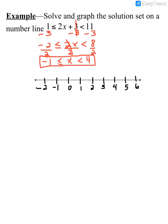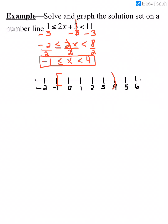Now I'll graph it on the number line. Starting with negative 1: since I see the straight line under the inequality symbol, I use a bracket — the straight line in the symbol matches the straight lines in a bracket. On the number 4, since there's no straight line under it, I use a parenthesis. X is in between the two, so I just connect those two endpoints.